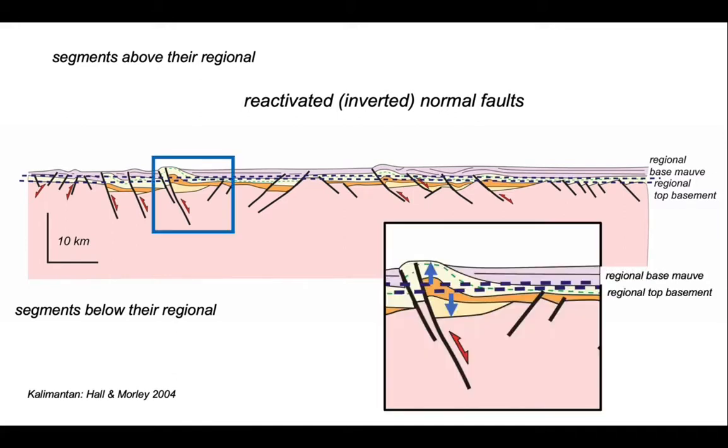Let's zoom in on one of the structures. We can illustrate this quite clearly here. The top of the basement has been down-thrown, net below its regional. And the base of the Miocene unit is elevated above its regional. So presumably, this structure started off as entirely a normal fault with a small basin package developed in its hanging wall. And then it's partly been reactivated as a thrust, uplifting the Miocene unit, but still retaining the top basement in net extension.